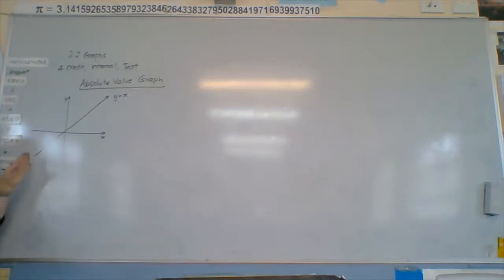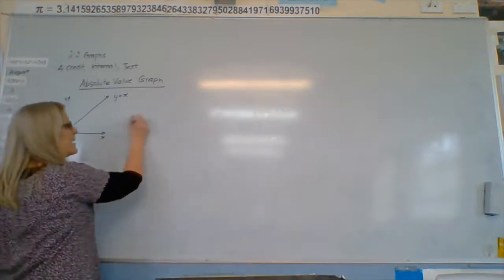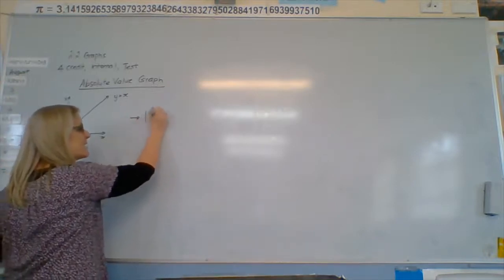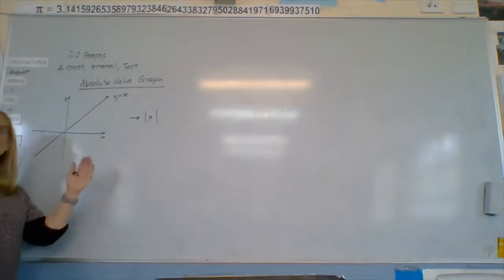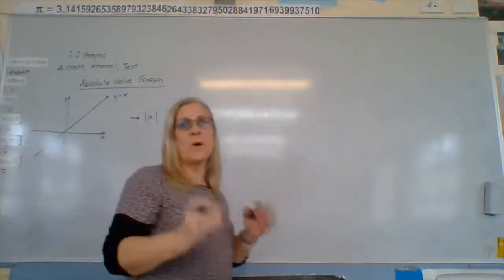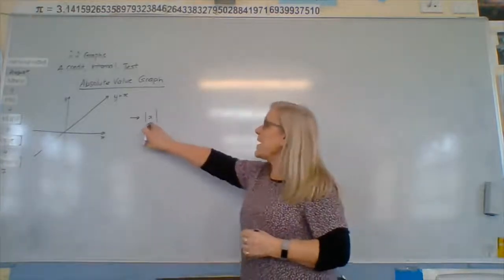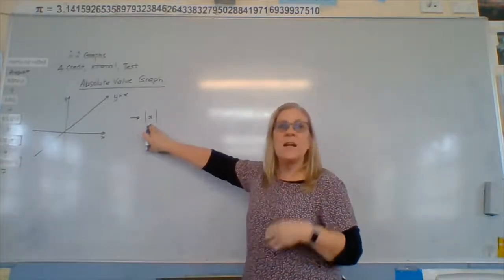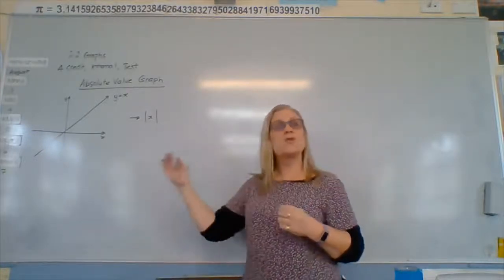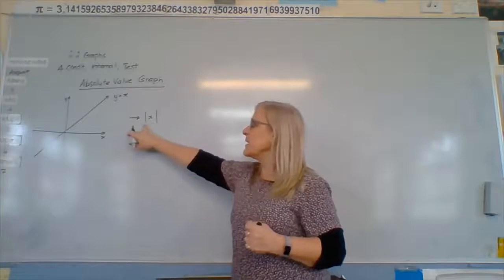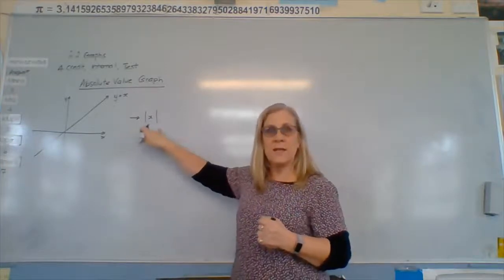Now, we're going to take that graph and we're going to make it into an absolute value graph by making x this. Now those two lines around x mean that anything, it's like a bracket, anything inside those two lines is always positive. So if we had x as negative 3, the answer to this would be 3. So we would drop the negative sign on anything once we've calculated within that bracket.